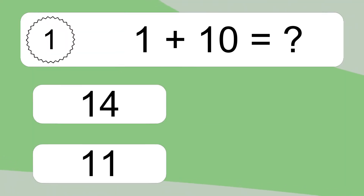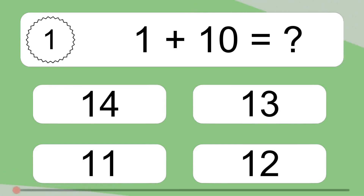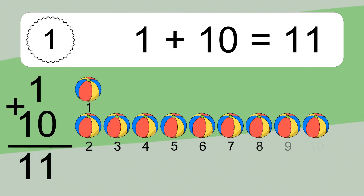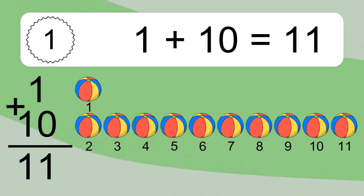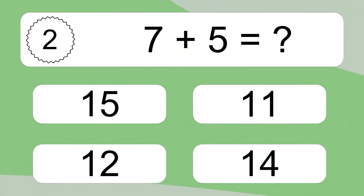1 plus 10 equals what? 1 plus 10 equals 11. Let's count it: 1, 2, 3, 4, 5, 6, 7, 8, 9, 10, 11.